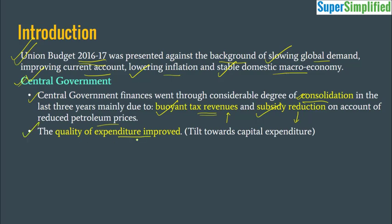The quality of expenditure also improved. There are two types of expenditure: revenue expenditure and capital expenditure. The budget has also adopted a new classification — earlier expenditure was classified as plan and non-plan; now it will be classified as revenue and capital. Revenue expenditure is required to run the government and fund various schemes, pay staff salaries; capital expenditure is investment in the economy to build long-term assets with a ripple effect. The quality of expenditure improving means capital expenditure has gone up.